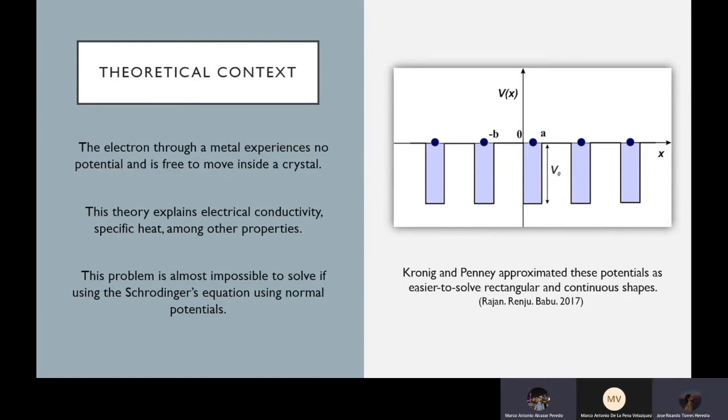So Kronig and Penney proposed this model and proposed periodic potentials because of the positive ions in the metals are considered. This problem is almost impossible to solve using inverse equations with the free electron model. So Kronig and Penney approximate these potentials as a rectangular continuous shape as shown in the next figure.